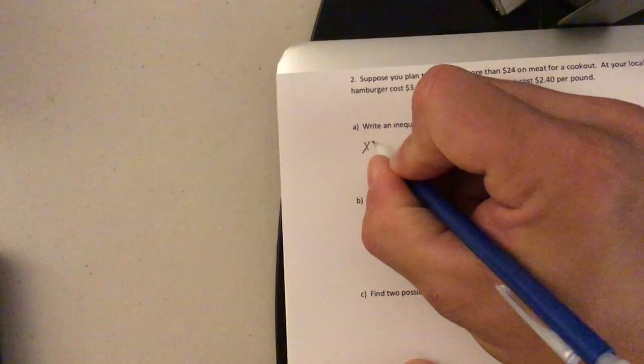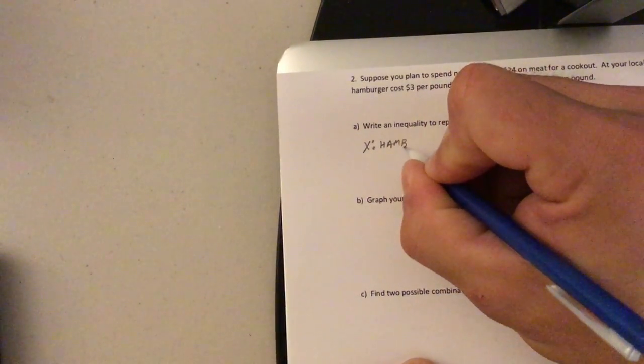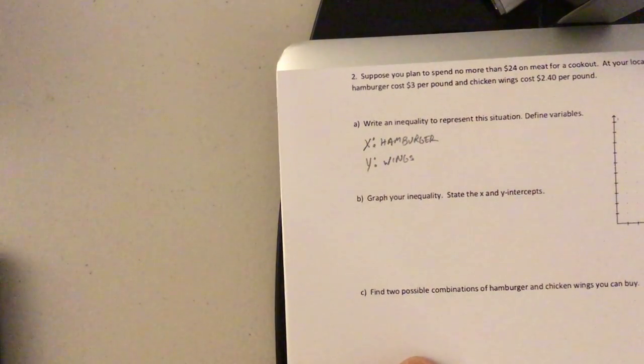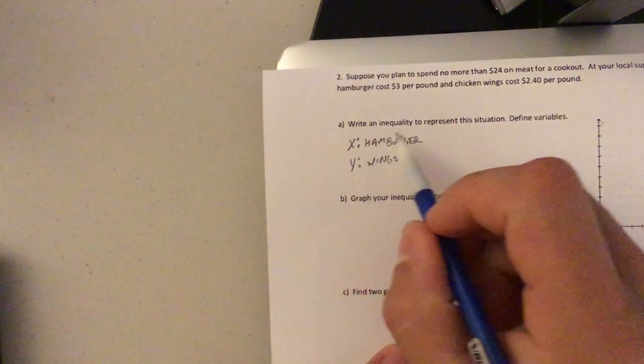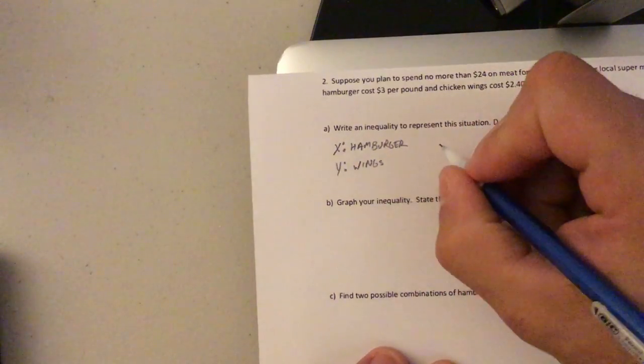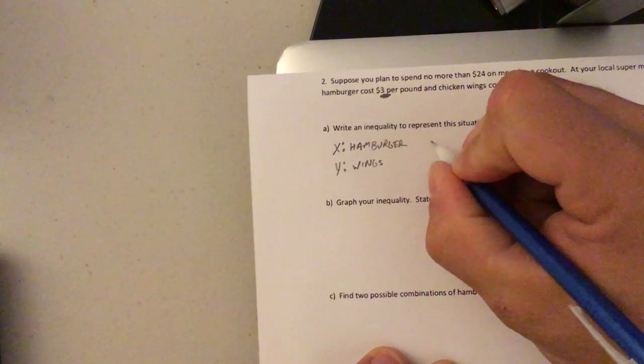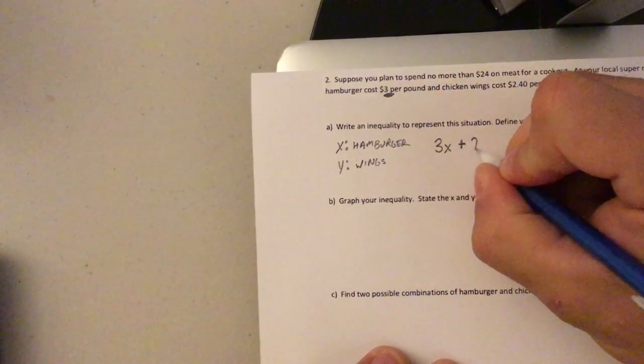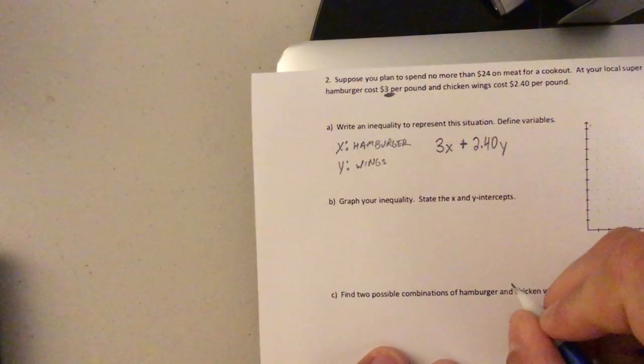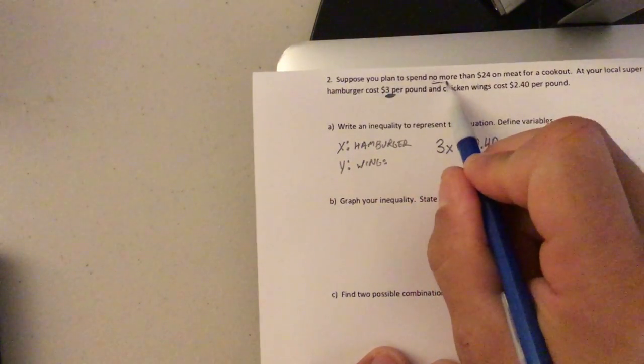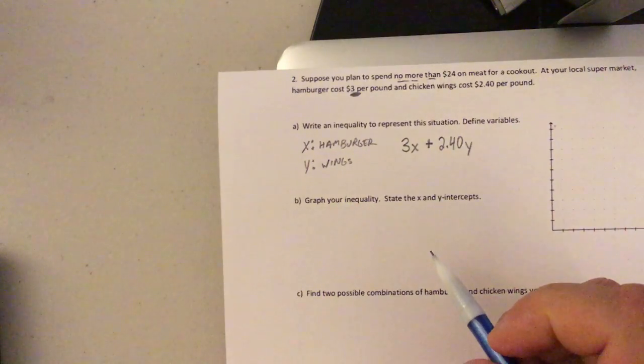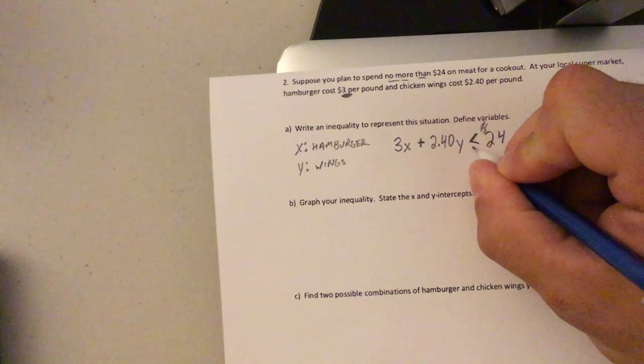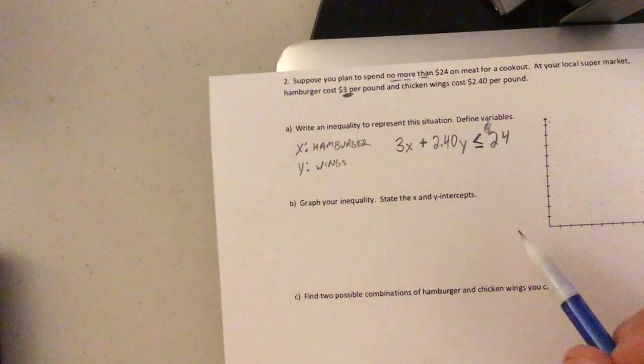Hamburger came first, so I'm going to call that X. This is a throwback to what we did last unit with defining variables. And wings came second, I'm going to call that Y. You can certainly go the other way with it. For me, this just makes the most sense. Okay. Write an inequality to represent the situation. Define variables. So hamburger was $3 per pound, so that's going to be 3X plus, we're also buying wings. Chicken wings were $2.40 per pound. Okay. Plus 2.40Y is no more than. No more than was one of our phrases from Friday. So that means it cannot be more than $24. You can't spend more money than you have. So it's going to be less than or equal to. No more than implies less than or equal to.